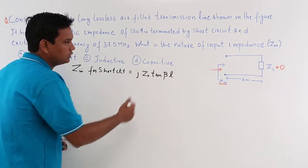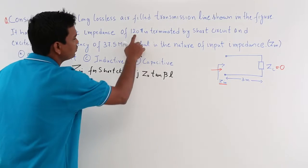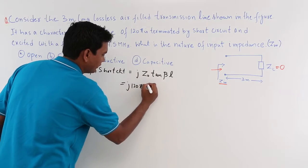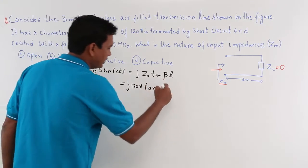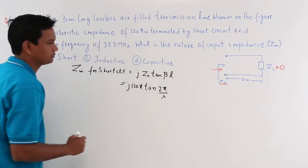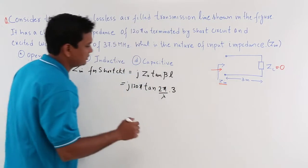Let us substitute the values. Z₀ is 120π, so it would be j120π tan(β). Beta would be nothing but 2π/λ. The length is 3 meters which is mentioned here.